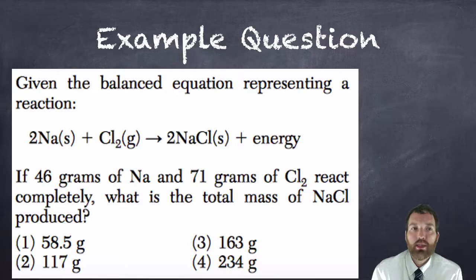Given the balanced equation representing a reaction, we have sodium plus chlorine making sodium chloride and energy. If 46 grams of sodium and 71 grams of chlorine react completely, what is the total mass of the sodium chloride produced? Go ahead and try to answer this question. When you're done, I'll go over it.